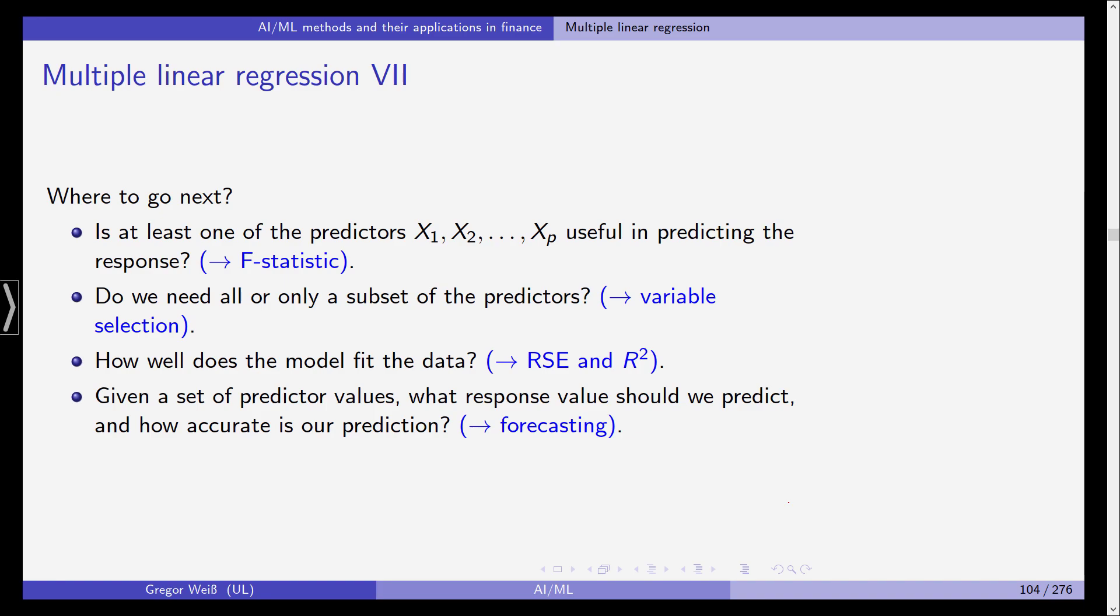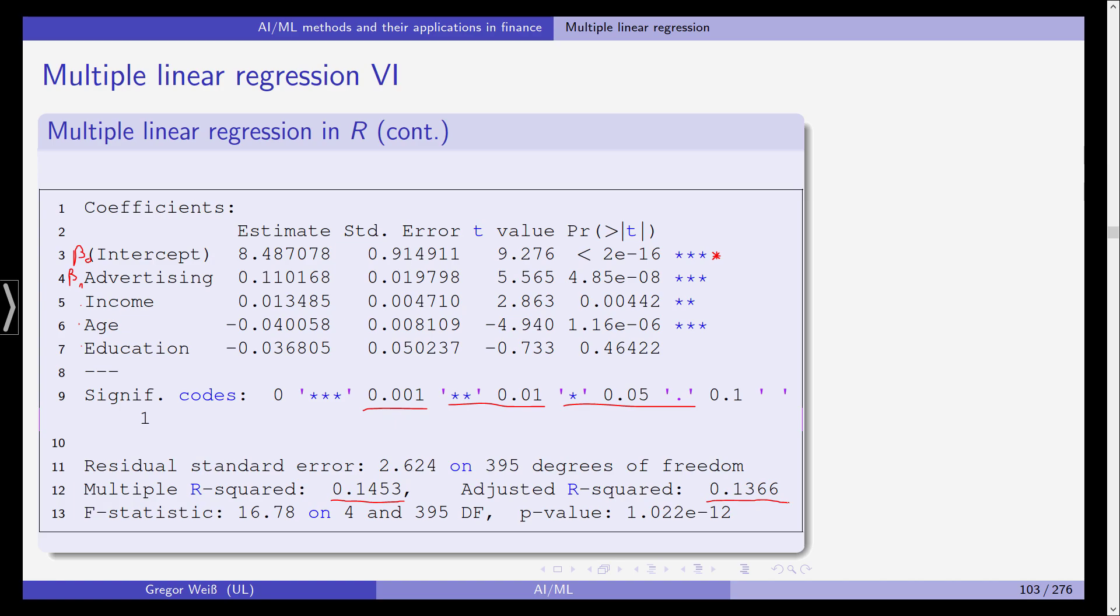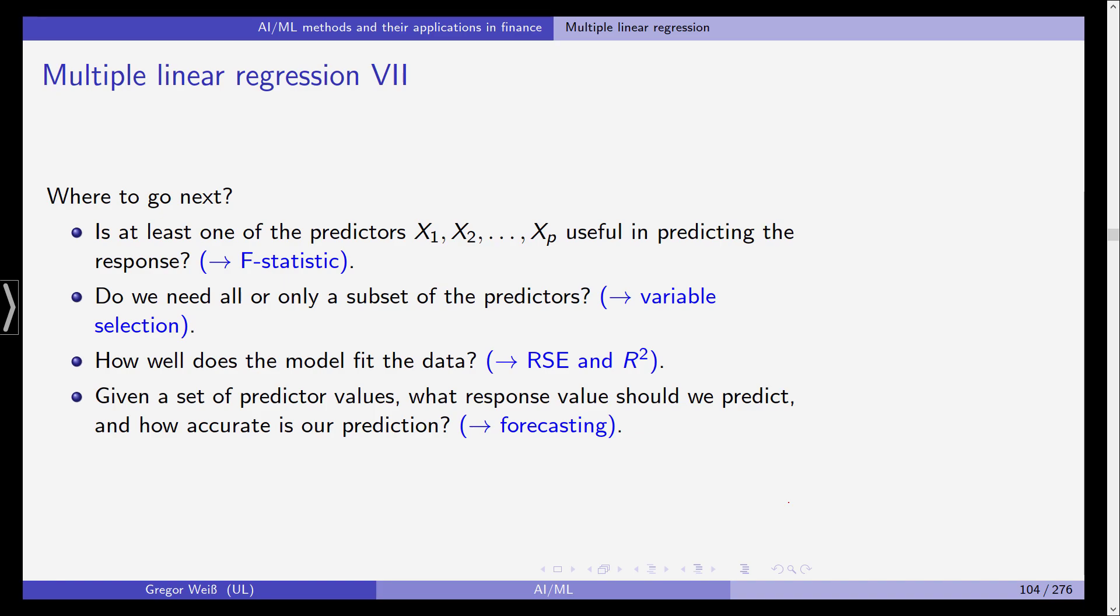So where should we go next? We should check: is at least one of the predictors useful in predicting the response? Well, you've already seen from the output from R, it seems 3 out of 4 predictors are significantly different from 0, so they are powerful to explain our response. So we can use the F statistic for the question, is at least one of the predictors useful in predicting the response? Then we have to decide on, do we need all or only a subset of the predictors? And we get to the question of variable selection. And then how well does the model fit the data? We have to again look at the RSE and the R squared.